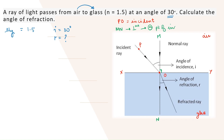This imaginary line MN, which is perpendicular to the interface at the point of incidence, is called the normal. The normal is like a reference line — all angles are measured from the normal. Remember, the normal is imaginary. The angle between the incident ray and the normal is called the angle of incidence. Similarly, the angle from the normal to the refracted ray is called the angle of refraction, written as R. Both angle of incidence and angle of refraction are measured from the normal.